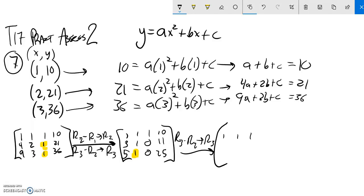So, 1, 1, 1, 10. 3, 1, 0, 11. 5 minus 3 is 2, 1 minus 1 is 0, 0 minus 0 is 0, 25 minus 11, that is a 4.